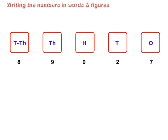Suppose we have 8 at ten thousands place, 9 at thousands place, 0 at hundreds place, 2 at tens place, and 7 at ones place. In figures, it is written as 89027, and in words as eighty-nine thousand twenty-seven.